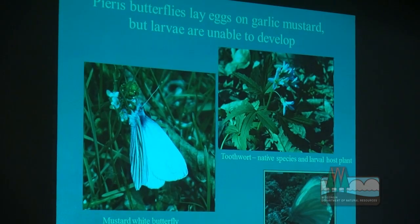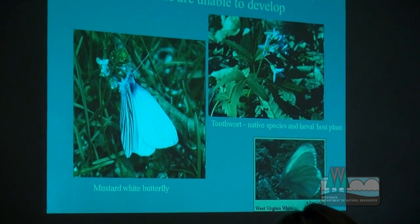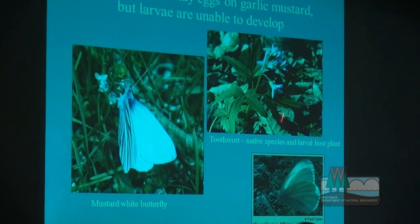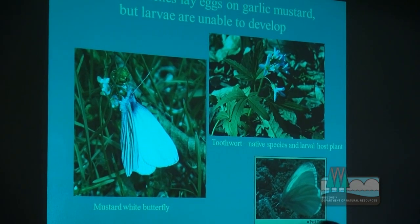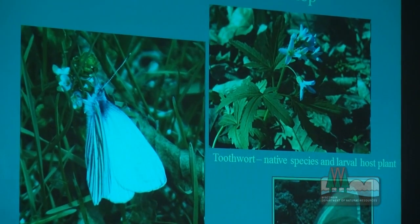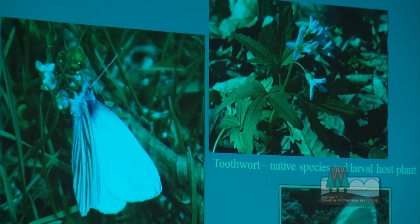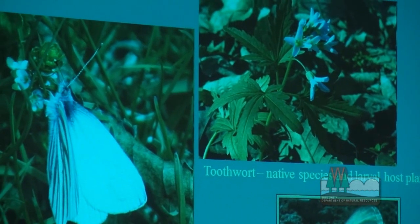The West Virginia white butterfly is in the 'whites' group, and its native larval host plant is the toothwort, which is being displaced by the related garlic mustard. This butterfly lays its eggs on garlic mustard, but the larvae cannot develop on garlic mustard. So it essentially acts as a population sink for this insect — the butterfly lays its eggs somewhere where they can't develop.